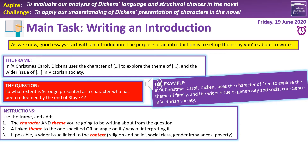On the screen you have the frame in the white box, which is a writing structure where you fill in the gaps. In the purple box there's an example of a good introduction based on the character of Fred. At the bottom are the instructions: add the character and/or theme you're writing about, link it to a theme or angle of interpretation, and if you can, link to the wider context and broader themes. The question we're working on today is in the red box: 'To what extent is Scrooge presented as a character who has been redeemed by the end of Stave Four?'